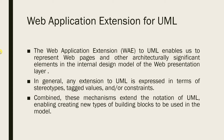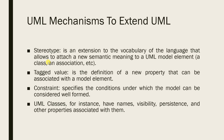In general, any extension to UML is expressed in terms of stereotypes, tagged values, and constraints. Combined, these mechanisms extend the notation of UML, enabling the creation of new types of building blocks to be used in the model. The stereotype is an extension to the vocabulary of the language and allows attaching a new semantic meaning to a UML model element, such as a class or association.